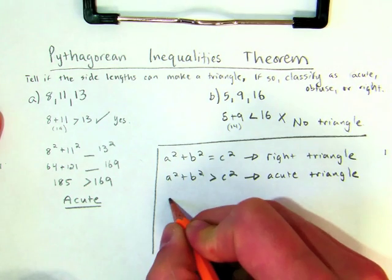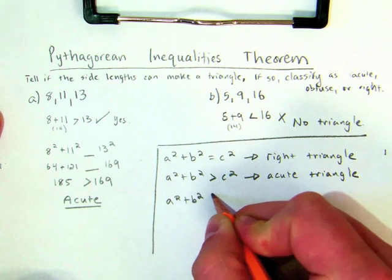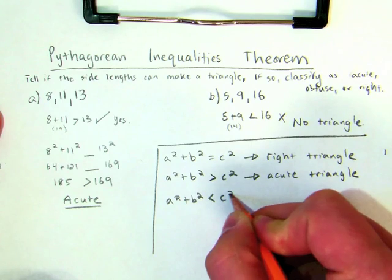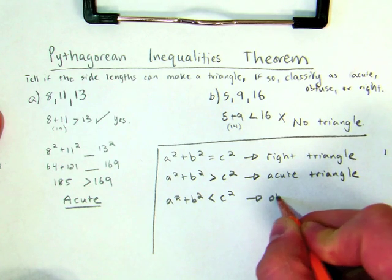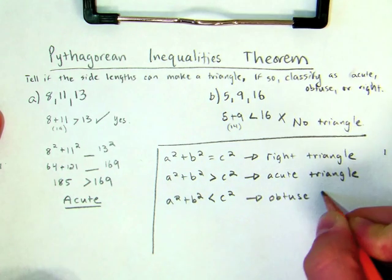And if a squared plus b squared, the third option, is less than c squared, then I'm looking at an obtuse triangle.